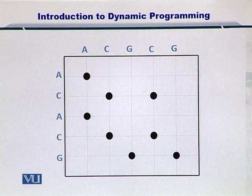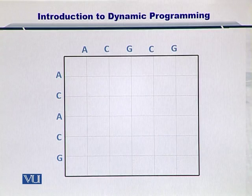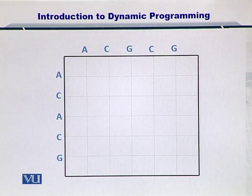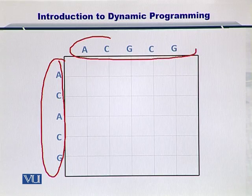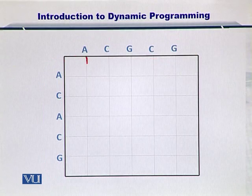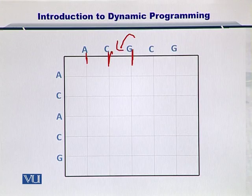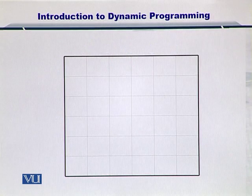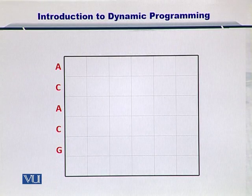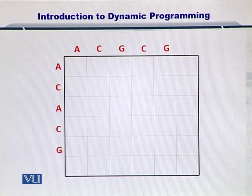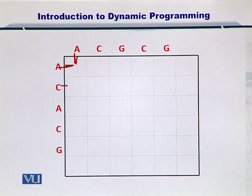This is how the dot plot was looking up till now. The first thing we need to do is get rid of the dots, which I have now erased. As a next step, I am going to slightly shift these sequences so that they are no longer on the end of the grid. Rather, they are placed at the center of the grid positions. So now A, C, A, C, G, and the other sequence — which is exactly the same except one nucleotide — are placed at the center positions of these grid points.